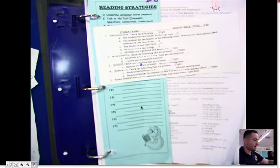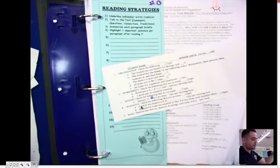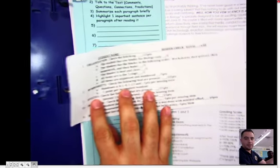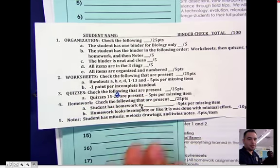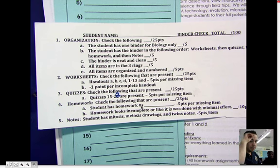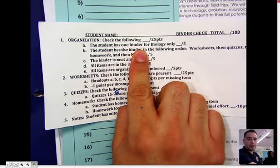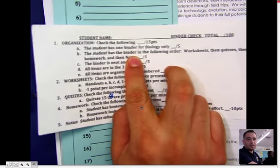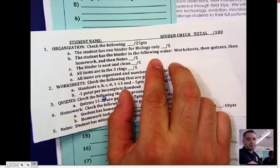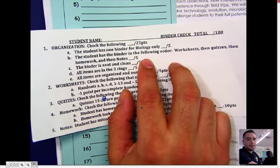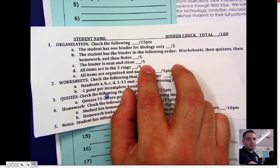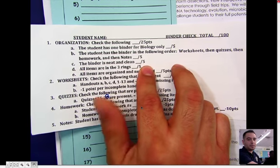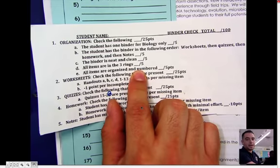So looking at your binder, you should have the same binder checklist printout. And this is what I'm going to use to grade it. So when we organize it, it should be only one binder for biology. It should be in the following order: worksheets, then quizzes, homework, then notes. The binder is neat and clean. All items are in the three rings, and they're all organized and numbered.